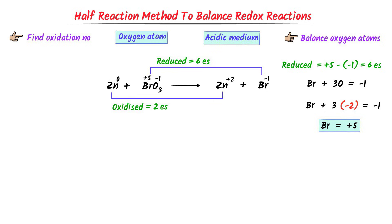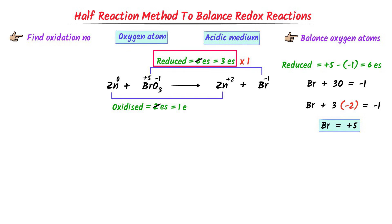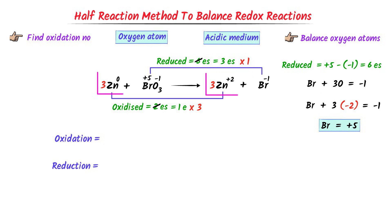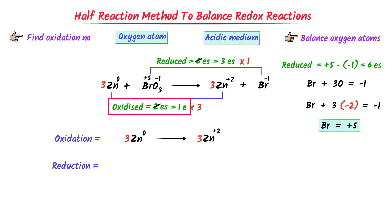The number of electrons lost is 2 and electrons gained is 6. We can simplify: 2÷2 = 1 electron, 6÷2 = 3 electrons. Now I use the trick — I cross-multiply the number of electrons. In oxidation there is 1 electron, so I multiply reduction by 1 (we cannot put 1 as a coefficient). In reduction there are 3 electrons, so I multiply oxidation by 3 and put 3 with zinc on both sides. Now I write the oxidation reaction and reduction reaction. Zinc is oxidized: 3Zn → 3Zn²⁺ ion. Since 1 zinc loses 2 electrons, 3 zinc loses 6 electrons.